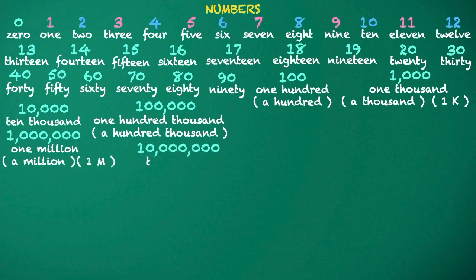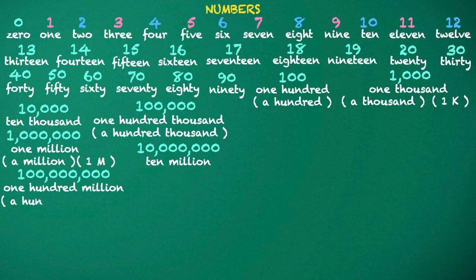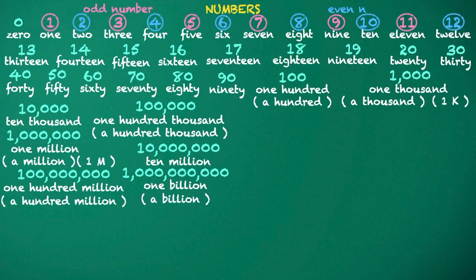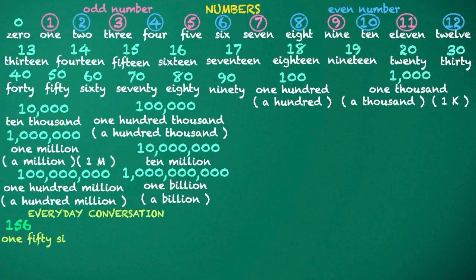10,000,000. 100,000,000. 1,000,000,000. Odd number. Even number. Everyday conversation: 1,56.